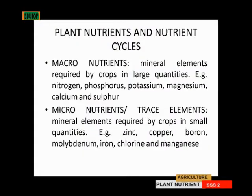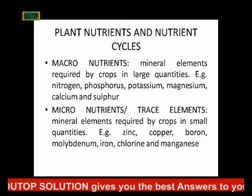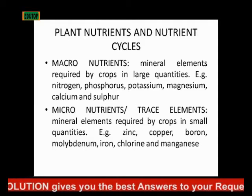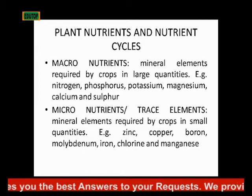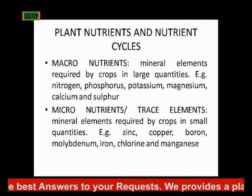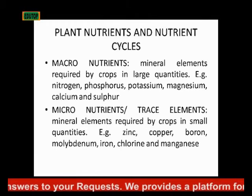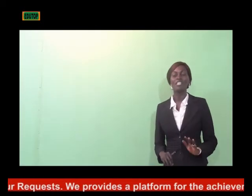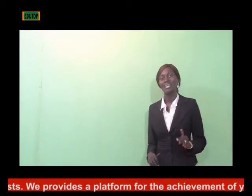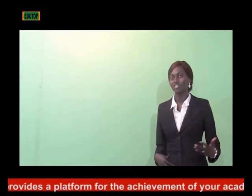Now let's get to work — Plant Nutrients and Nutrient Cycle. Plant nutrients are basically divided into two: macronutrients and micronutrients. Macronutrients are mineral elements required by crops in large quantities. Examples of macronutrients include nitrogen, phosphorus, potassium, magnesium, calcium, and sulfur — these are the major elements that plants need in large quantities.